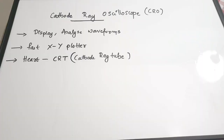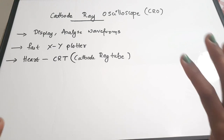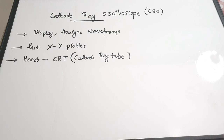Today we are going to discuss about the cathode ray oscilloscope or CRO. As engineers we have seen this at least once in our lifetime. We'll be discussing the structure and working of CRO, and also the very important topic of Lissajous patterns towards the end of this video, which is especially important for diploma examinations.